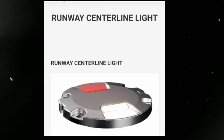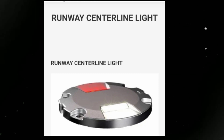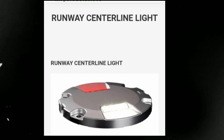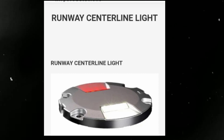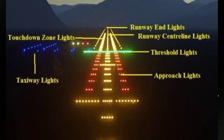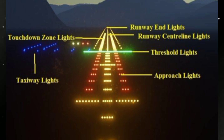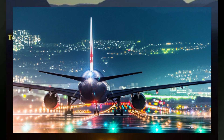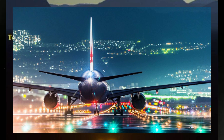What is the function of centerline lights in an airport runway? Centerline lights on an airport runway serve an essential function in guiding pilots during takeoff and landing. They are installed along the centerline of the runway. Precision guidance: centerline lights provide precise guidance to pilots during takeoff and landing. By maintaining alignment with the centerline lights, pilots can ensure that the aircraft remains properly centered on the runway, reducing the risk of veering off course.